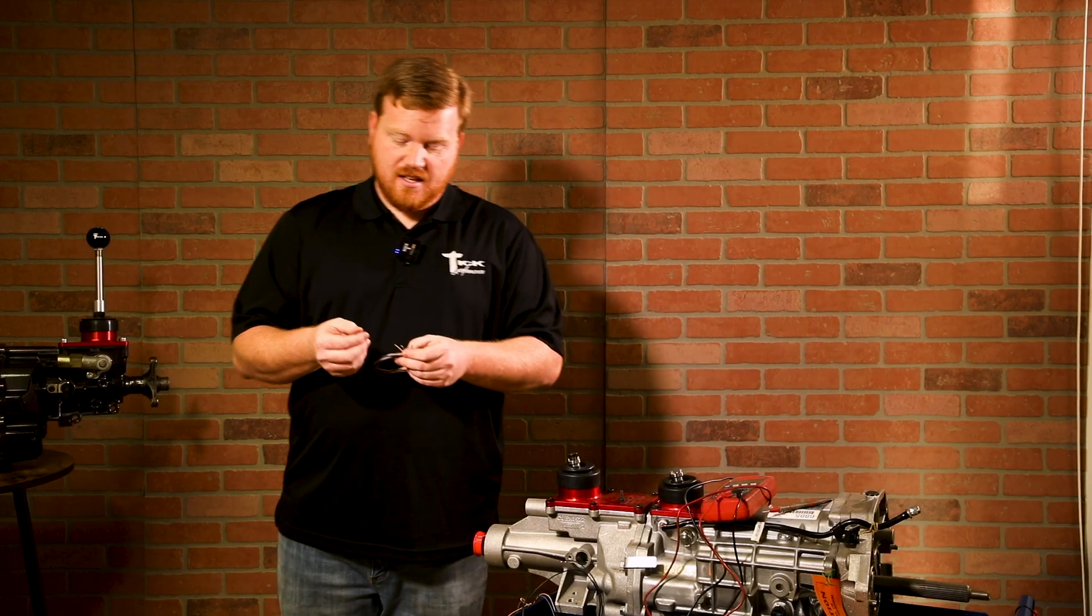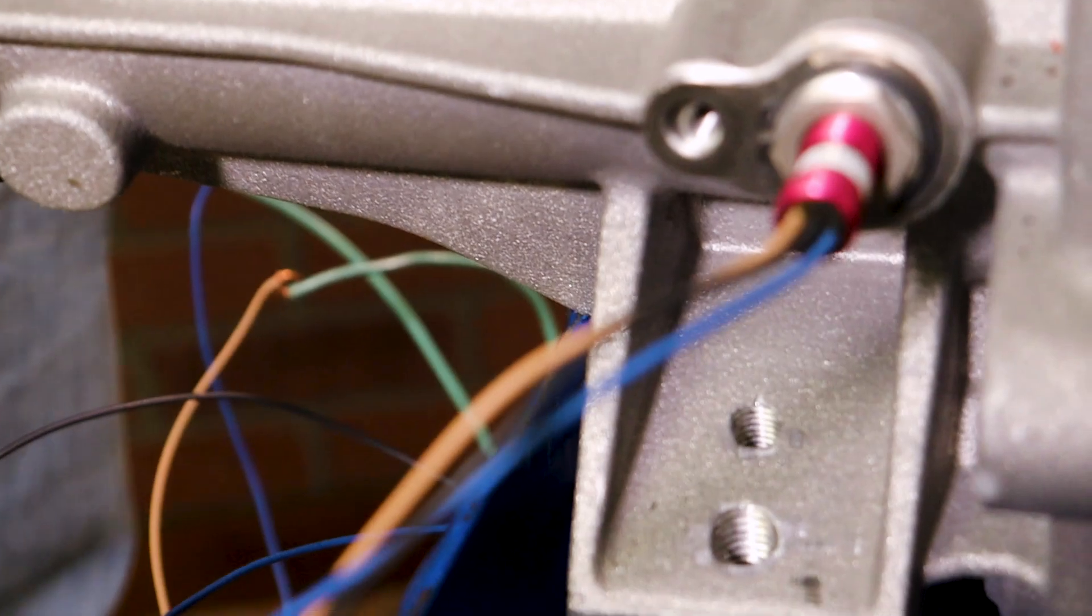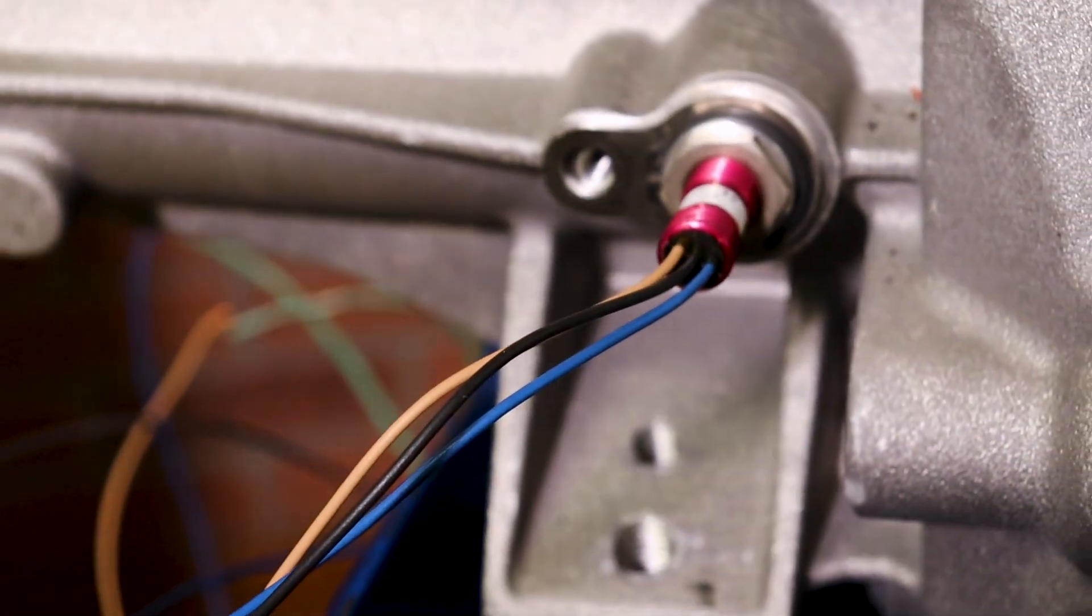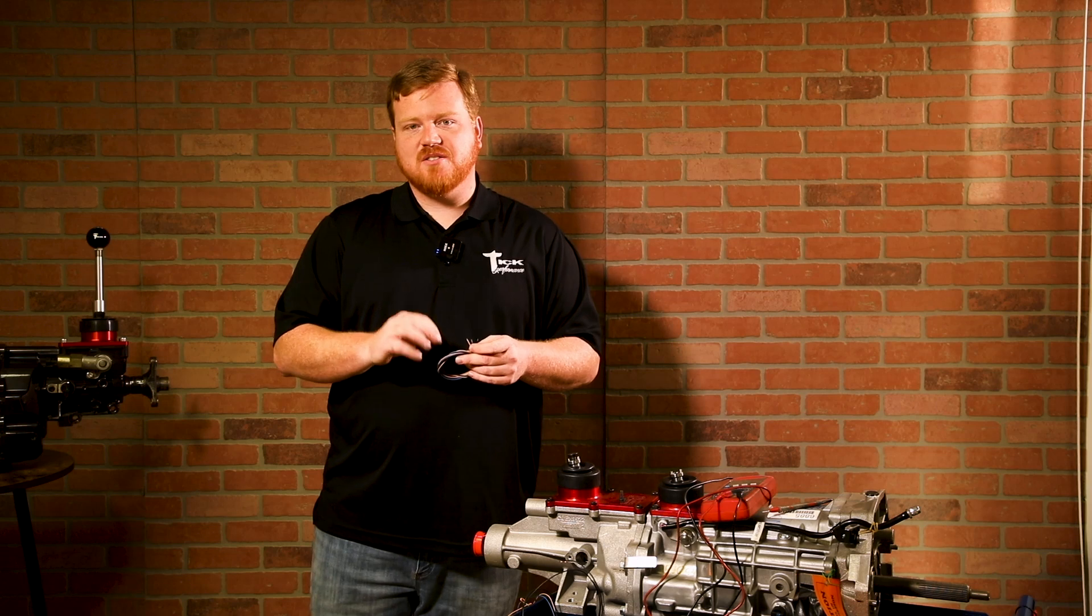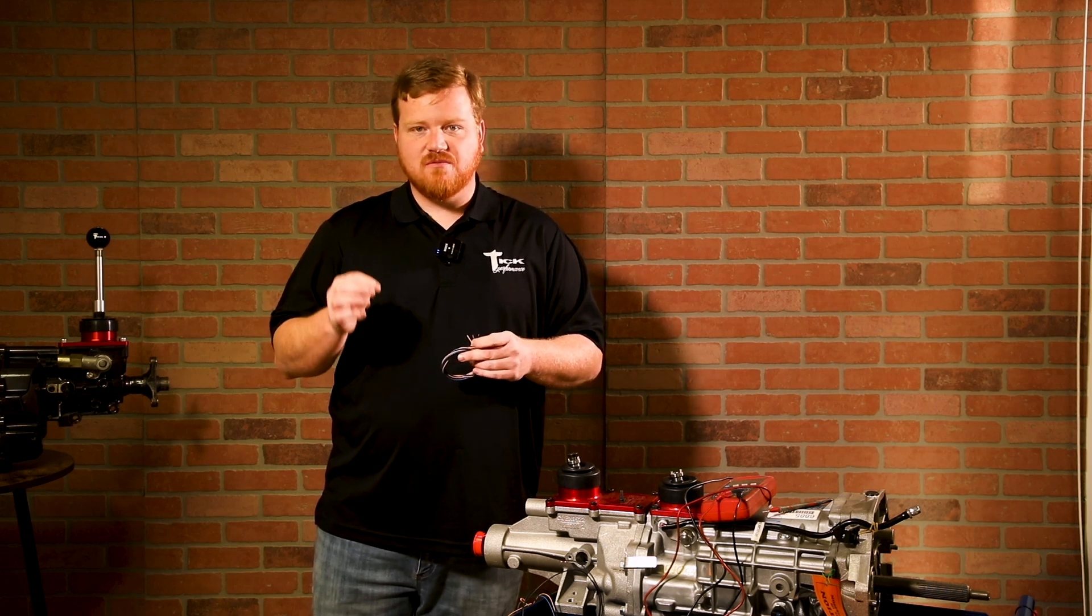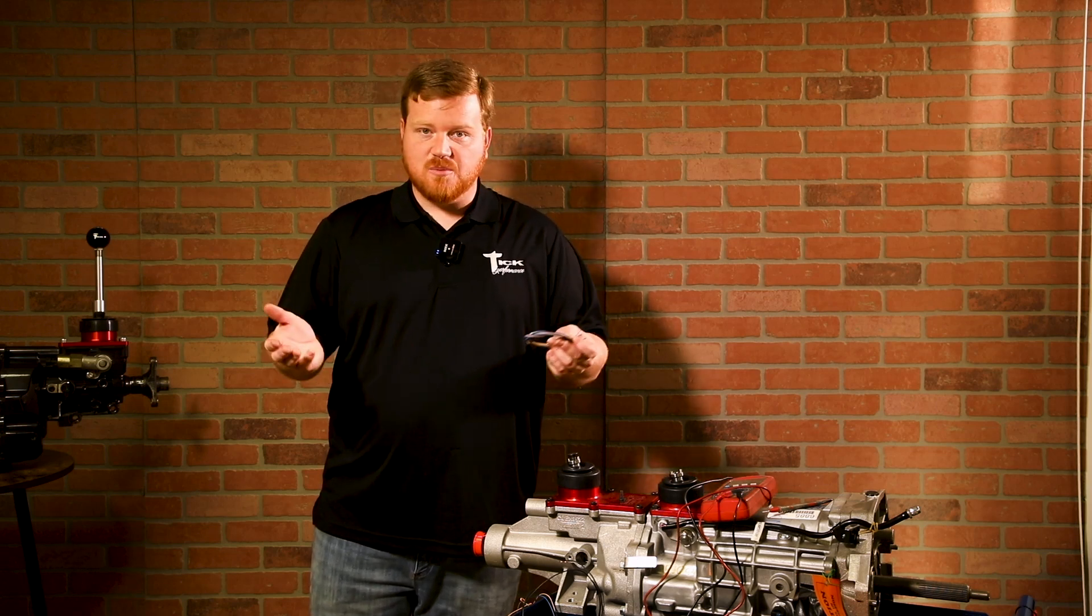So ground, it's just going to be a good chassis ground. And then on your power source, you can do a five volt, you can do a 12 volt. If you're on a 16 volt system, you can do that. Depending on what voltage you supply the sensor with, you're going to have to have a resistor for that voltage. We'll supply those as well.